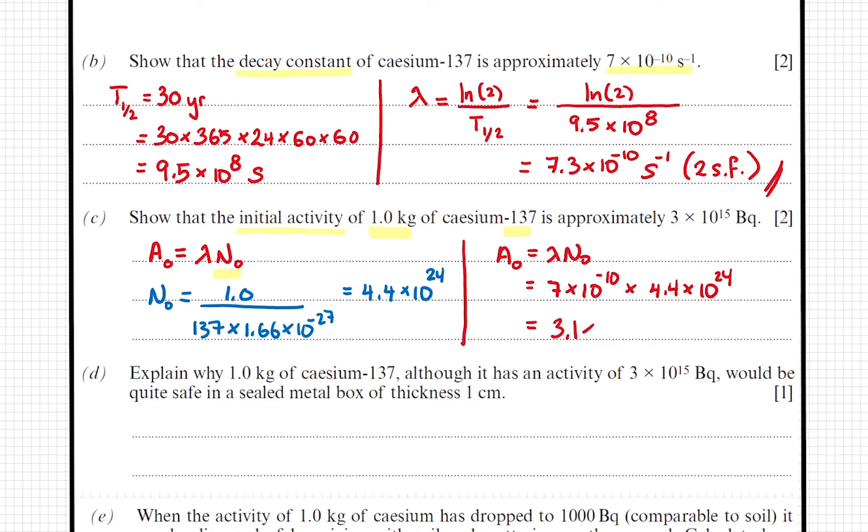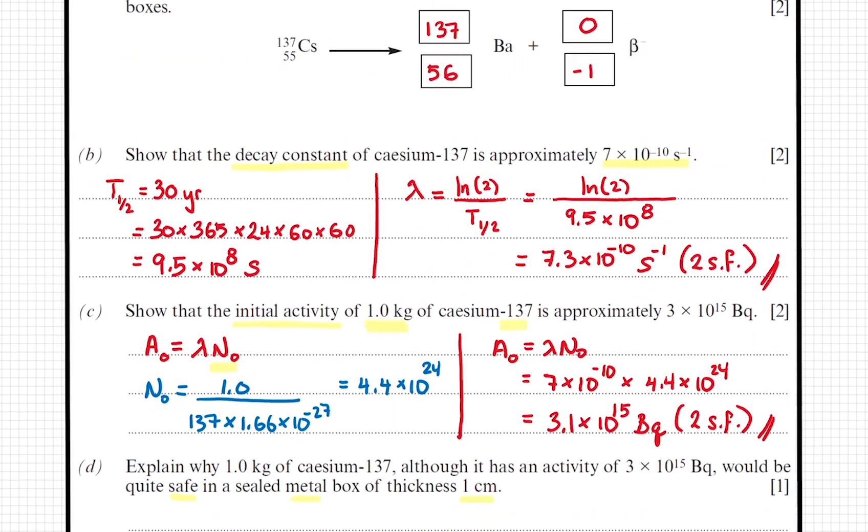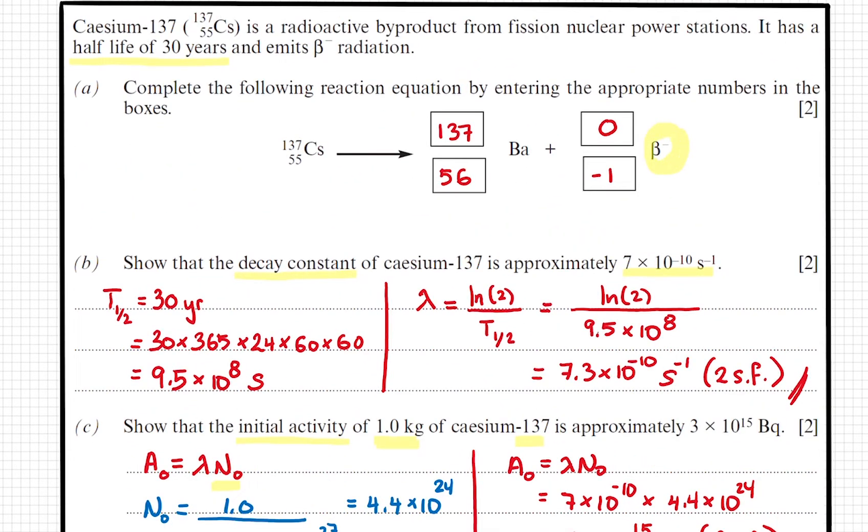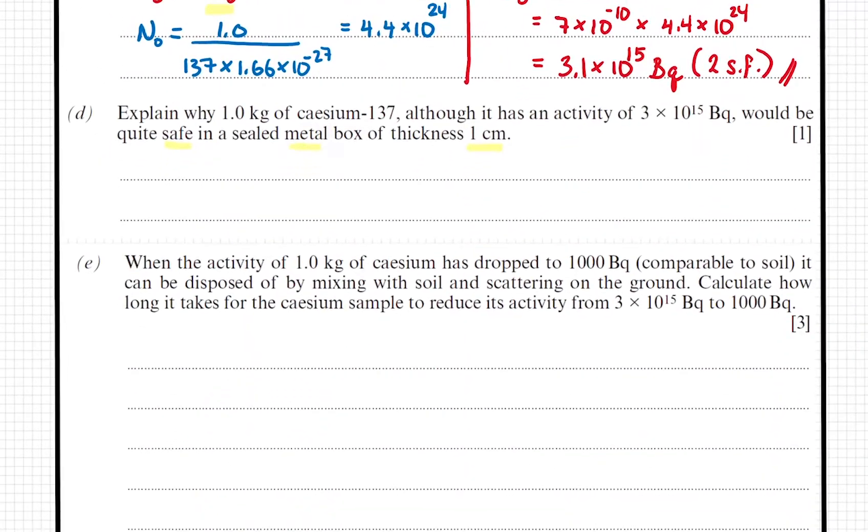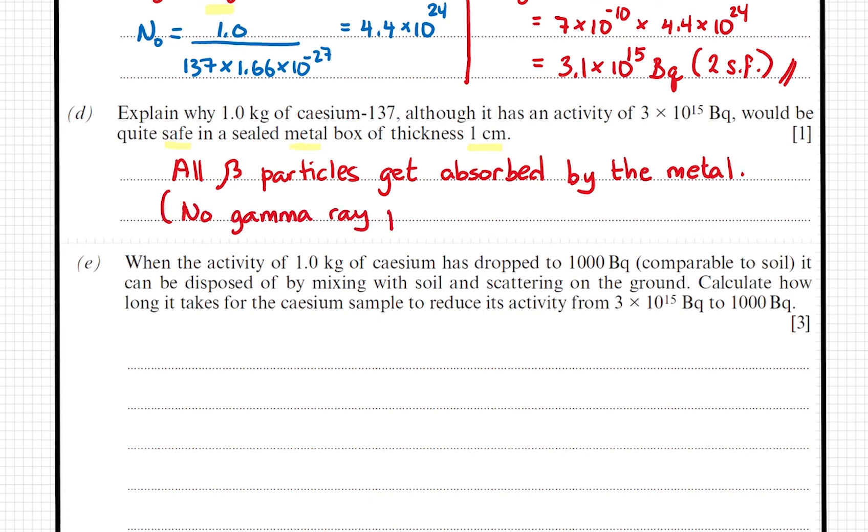And we get 3.1 times 10 to the 15 Becquerels. We have to explain why 1 kilogram of cesium-137 would be safe in a sealed metal box. The equation tells us that cesium decays into beta particles. Beta particles can be absorbed by metal with a thickness of 1 centimeter. But if the decay involves gamma ray, that would easily penetrate the metal.